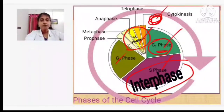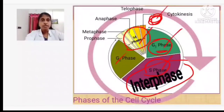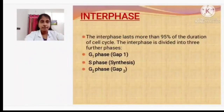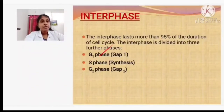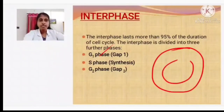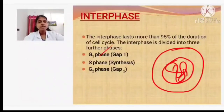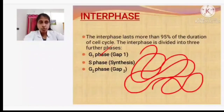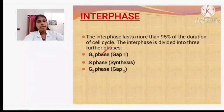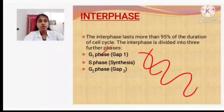Sometimes the replication of DNA will also take place at the end of G1 phase, or it may start in the S phase. Inside the cell there is a nucleus, and inside the nucleus there is the chromatin network — the chromosomes. The chromosome is a thread-like structure made up of DNA and protein.